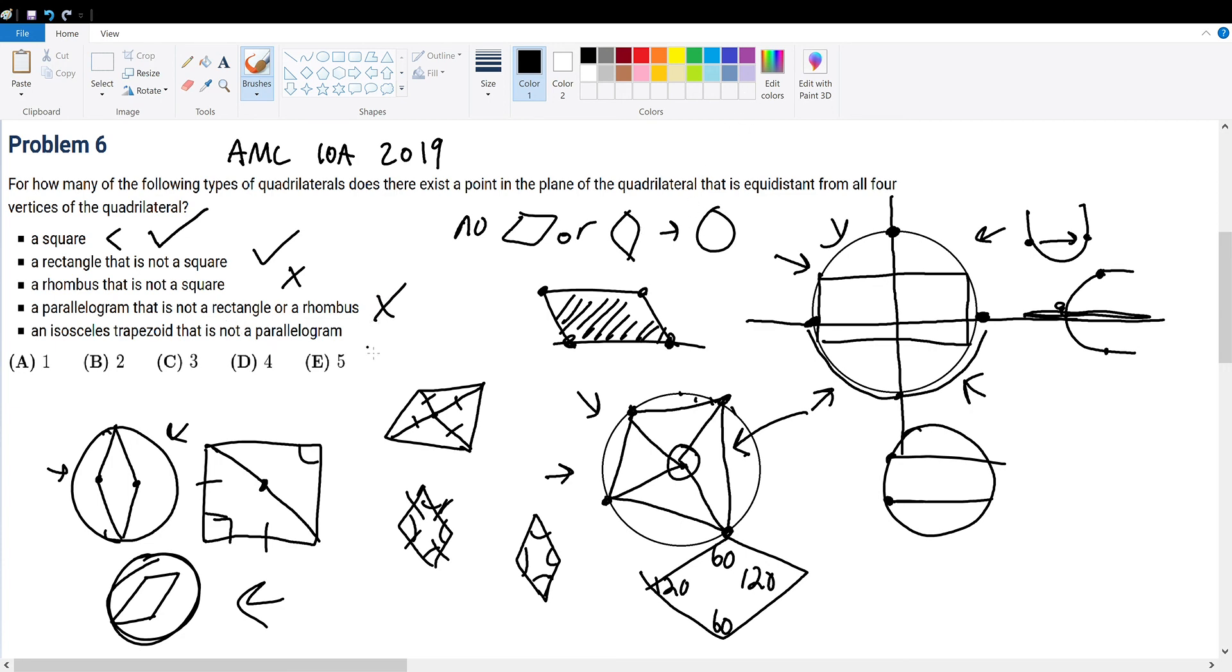What about an isosceles trapezoid? Fun fact, an isosceles trapezoid is the only trapezoid that can be inscribed within a circle. Again, this is provable by similar triangles, and I'm not going to prove it, but this is true. Even if you don't know this, you can draw yourself a rough model of one.